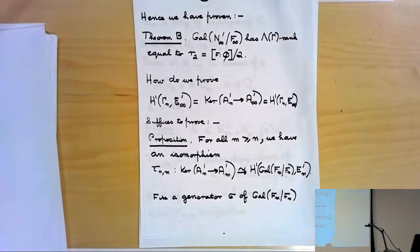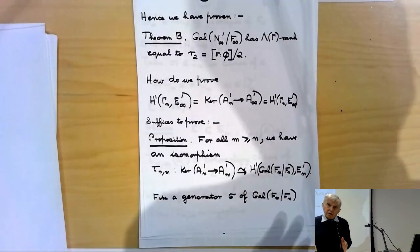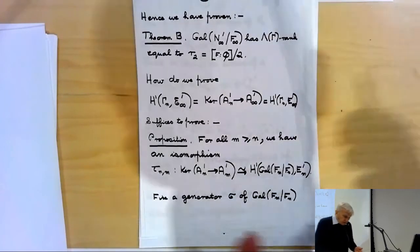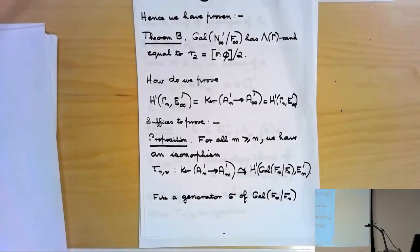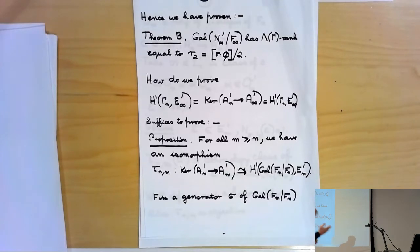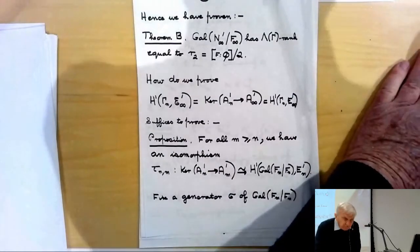As I mentioned, Iwasawa points out that this proof actually tells you more: if you analyze it a bit more carefully, you can determine the whole torsion submodule. It turns out the torsion Λ-submodule is a free Z_p-module and you actually know its whole structure and characteristic power series — it's a very simple object. All the mystery about what happens with the torsion submodule is tied up with the Galois group of M∞ over N∞'.